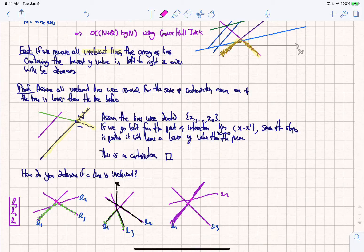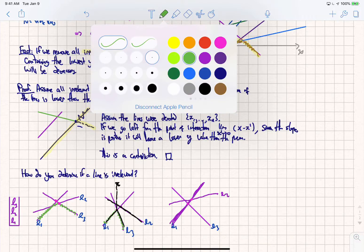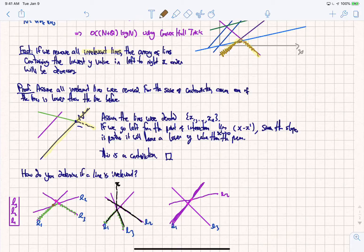and take the point of intersection between L1 and L2, and L1 and L3. So if we take the point of intersection between those, we're going to get something like this. So L1, L2, and then L1, L3 is like this.